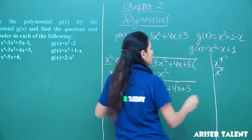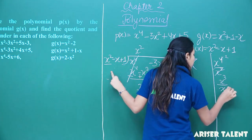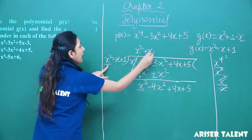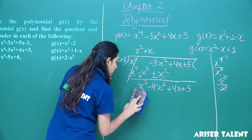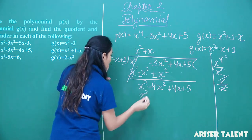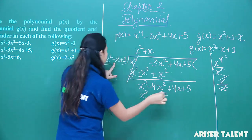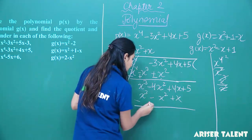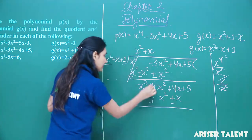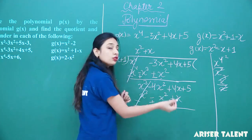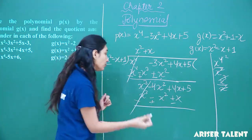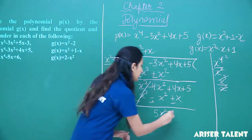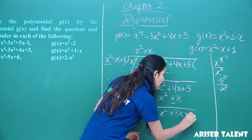We have x cubed and x squared. x cubed divided by x squared gives x. So write plus x here — that gives x cubed. Then minus x squared and plus x. Change the signs: plus, plus, minus. Cancel. Minus 4x squared and plus x squared gives minus 5x squared. Then plus 4x minus x gives plus 3x, and plus 5.